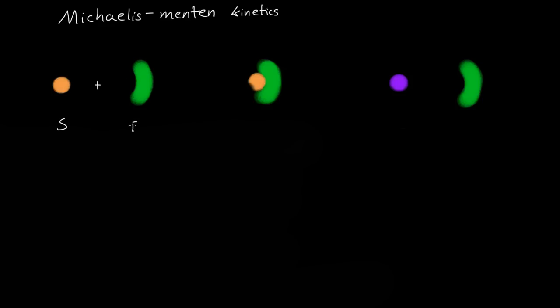This is a quick video over Michaelis-Menten kinetics and how to derive it. So let's say we have some substrate and some enzyme. The substrate and enzyme must interact, so they must turn into some complex called SE — that's just the substrate and enzyme connected together.